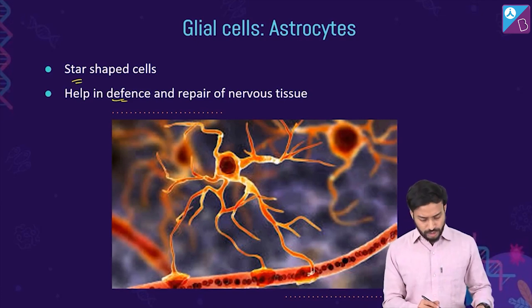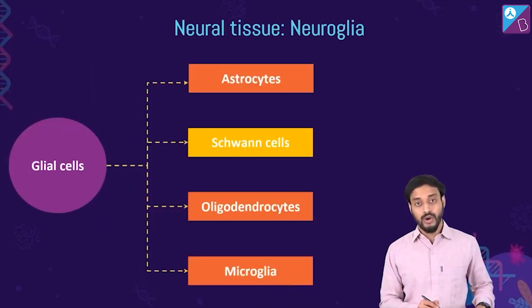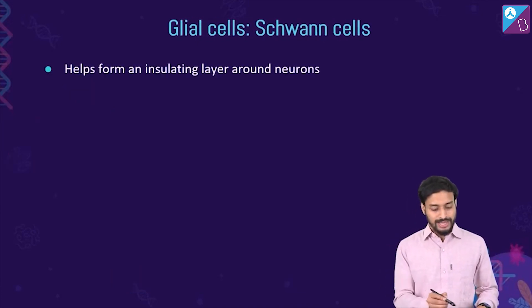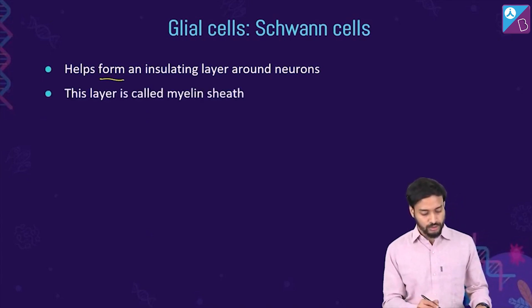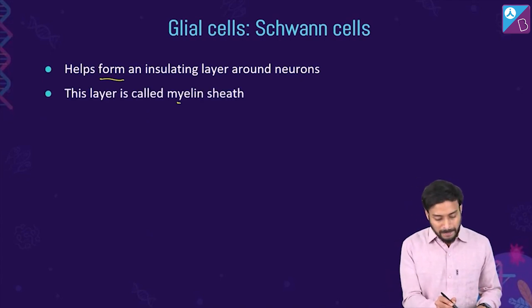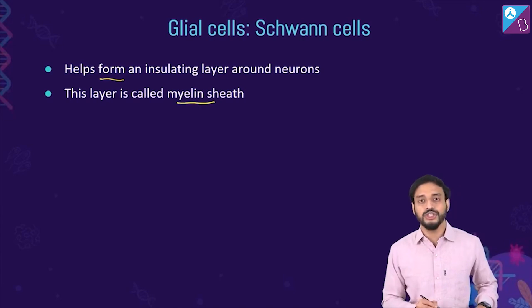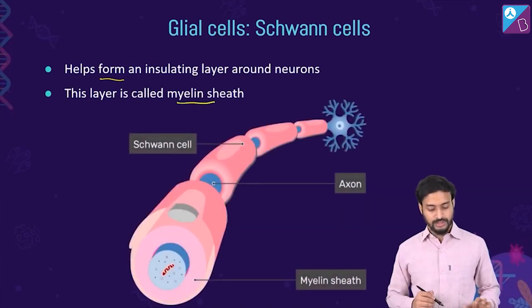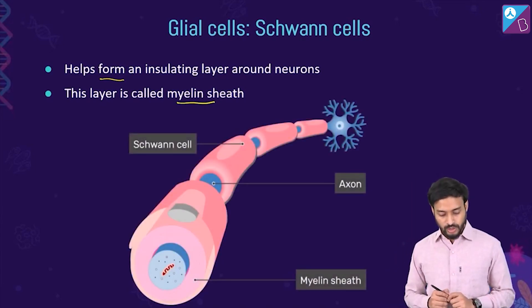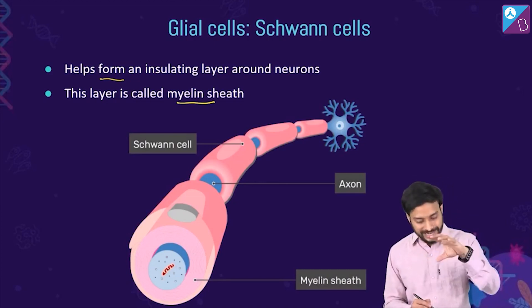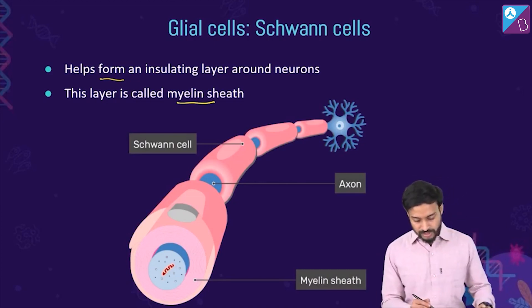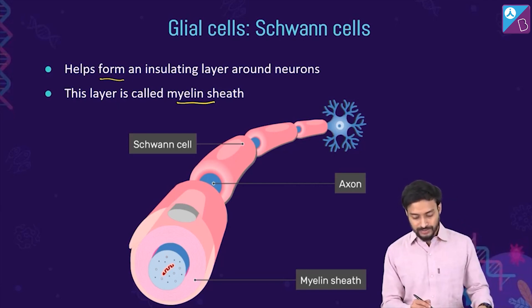Schwann cells help in forming an insulating layer around the neurons. This insulating layer is called the myelin sheath.